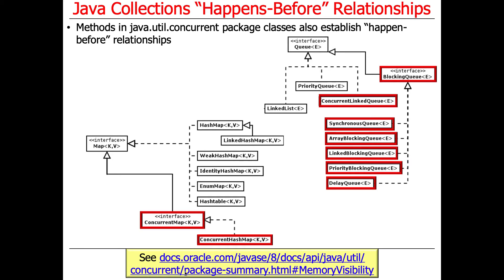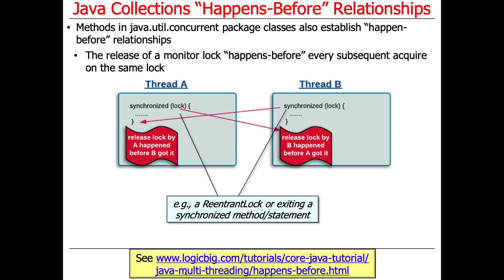There are also methods within concurrent collections that have the same types of properties. We'll look, for example, at some of the concurrent collection methods focusing on concurrent hash map. Let's start off with something a little bit more general, though. The release of a monitor lock happens-before every subsequent acquire on the same lock.